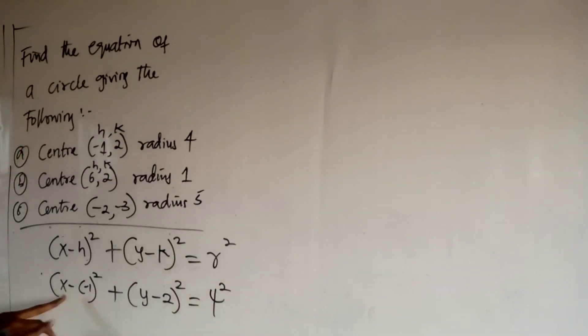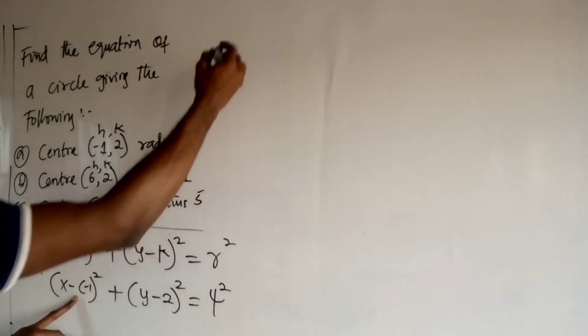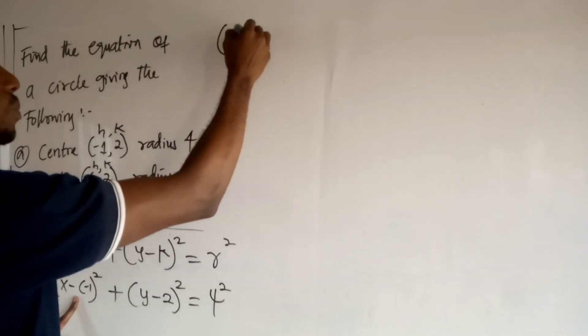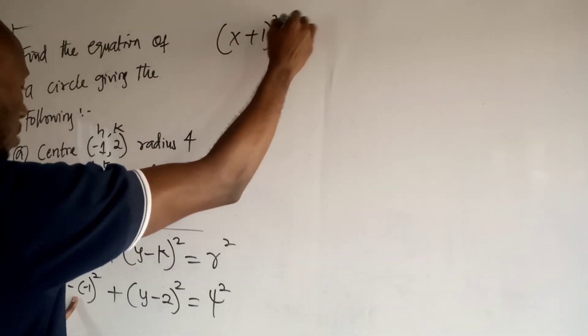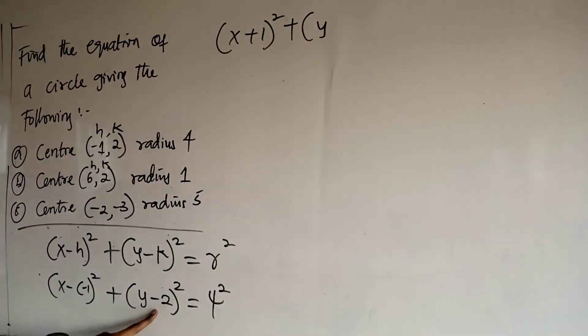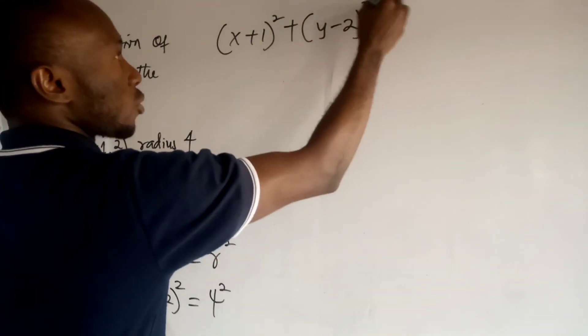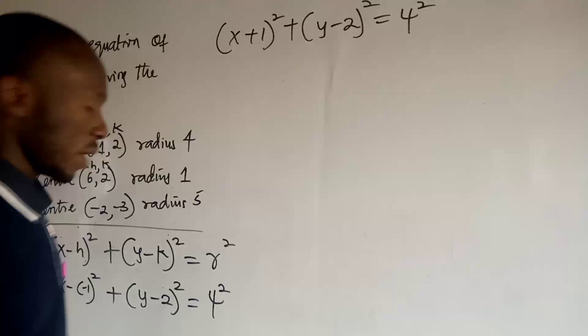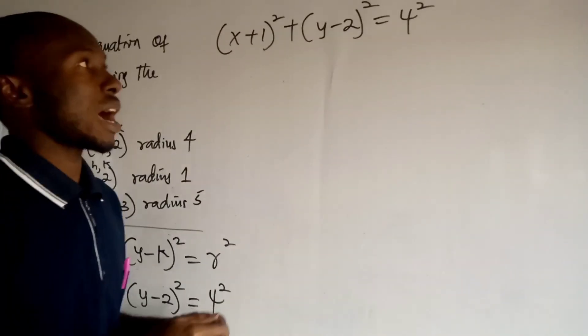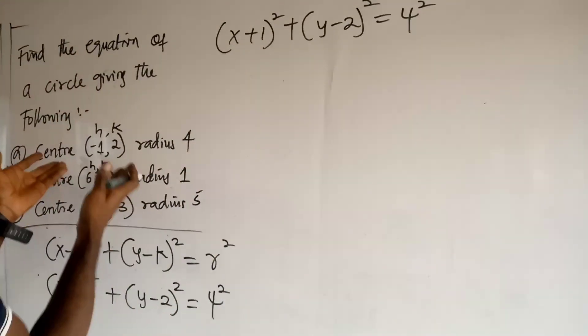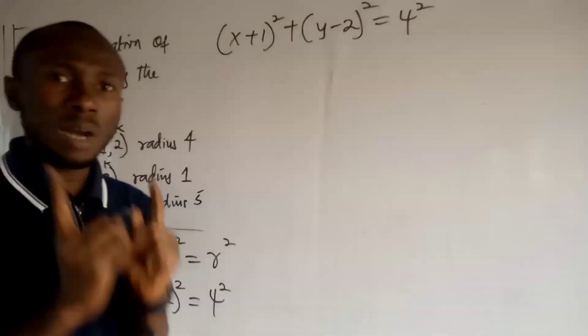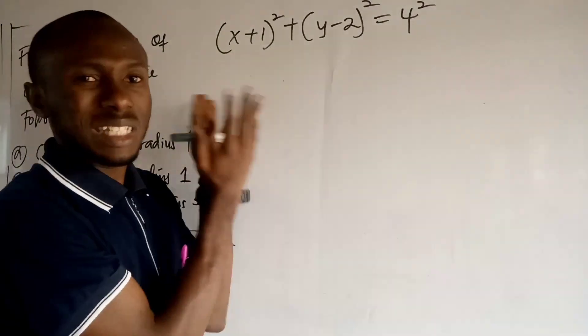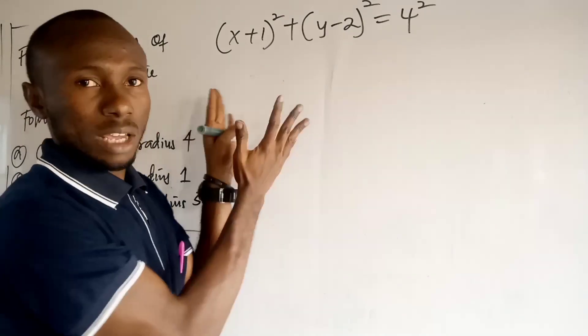So, at this point, minus minus 1 will round out to be x plus 1 all squared plus y minus 2 all squared equal to 4 squared. Viewers, this is how we can write the equation of a circle when we are given all of this information. And as a matter of fact, this form is called the standard form of a circle.